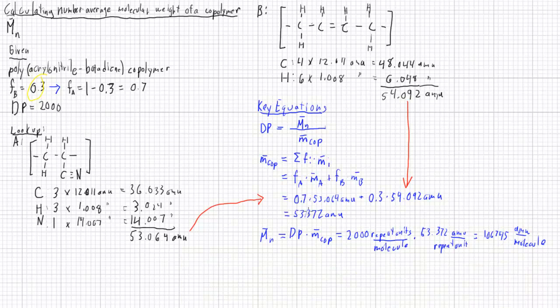To recap, we're looking for the number average molecular weight of a copolymer, which can be found in this equation here, relating it to the degree of polymerization and the average molecular weight of one repeat unit.